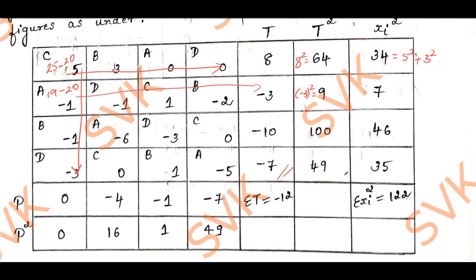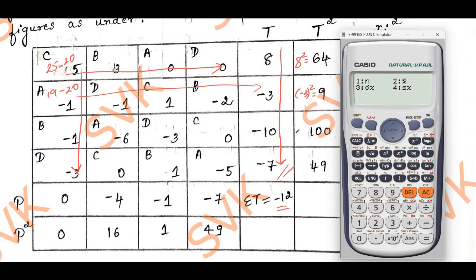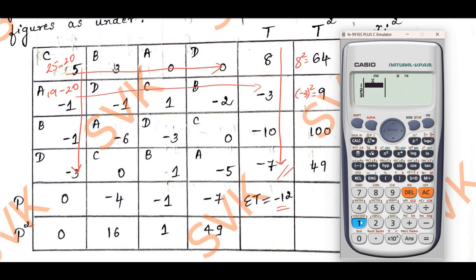Continuing like that, I get summation of t (adding all row sums) = minus 12, and summation of xi squared = 122. Similarly, I find p and p squared for columns. To calculate this using the calculator: enter the values of the first row (5, 3, 0, 0), press AC, then Shift 1, go to sum, press 3, then select summation x — that gives the t value of 8. Square that to get 64.